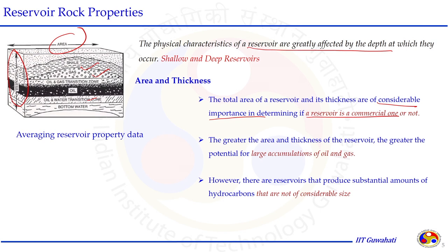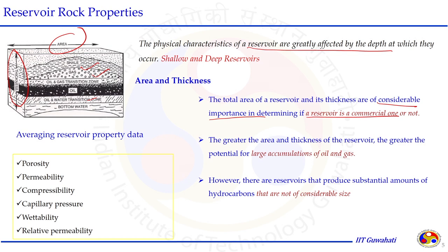The distribution of properties is very heterogeneous in almost every aspect, so averaged reservoir property data are considered in mathematical calculations. For example, the porosity of a reservoir is not a single value — it varies from location to location, so several samples are collected, analyzed, and the average value is used. Porosity, permeability, compressibility, capillary pressure, wettability and relative permeability are important parameters that characterize the reservoir in terms of its holding capacity and how much hydrocarbon fluid can be produced.